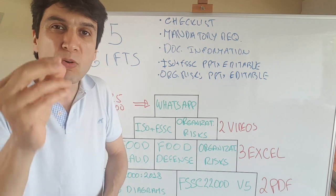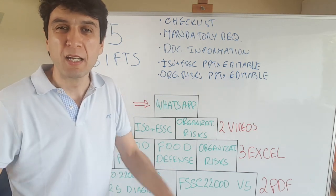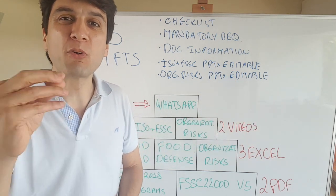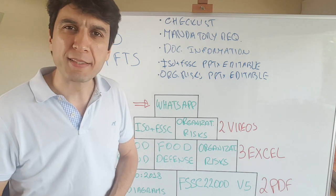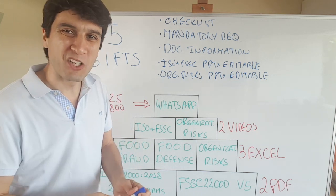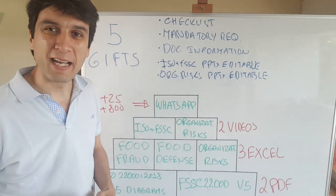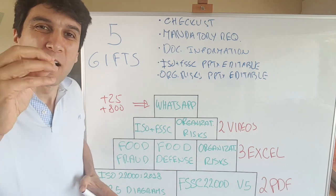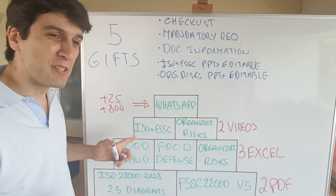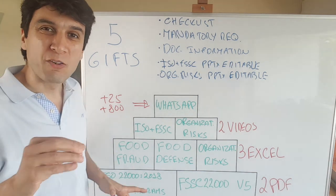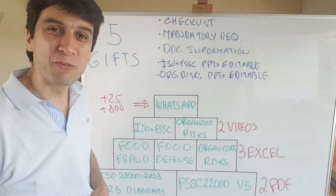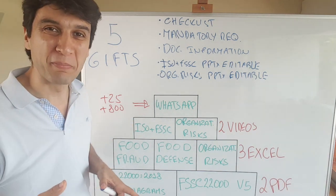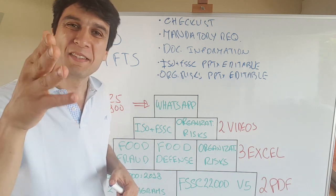So, the 8 tools in the blueprint, and until the end of this month, the 5 gifts: checklists, mandatory requirements, documented information, and editable PowerPoints — so you can use them right away the day after you join the blueprint. I hope this is enough for you to consider taking a deeper look at this blueprint and maybe joining us. I will be there, and many more food safety professionals will be there waiting for you and welcoming you to this group. Together we are going to reach 1,000 years of experience in food safety in this group. Come on, join us — see you soon!